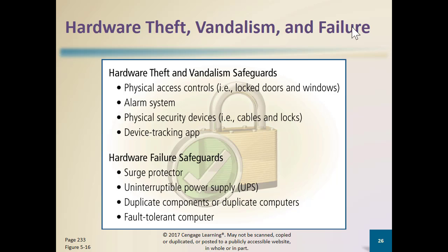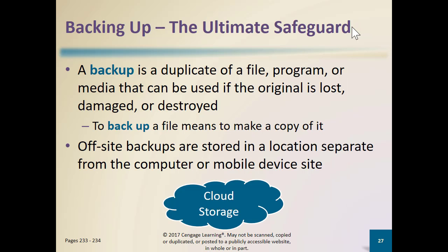We've already discussed surge protectors and uninterrupted power supplies. Duplicate computers, or fault-tolerant systems, are where we have two physical computers that can perform the same function. They both know they're working, they can work together, and one will take over the load if the other fails — we call that a failover cluster. We cluster multiple machines together so that if the hardware fails, we don't lose the website. Can you imagine if a server failed at Amazon and you couldn't get on the site for 30 seconds — how much revenue would that cost?